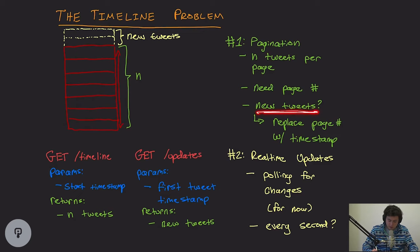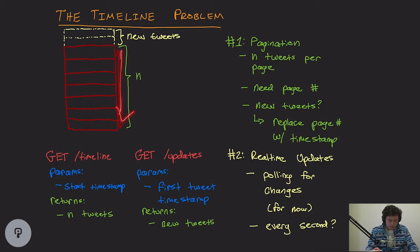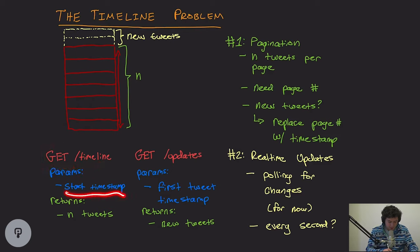In order to do that, we'll consider new tweets and replace the page number with the timestamp of the tweet we're at. Another option is just to use tweet ID — you could say get the next N after this ID. You can also achieve this with timestamp: we want everything that happened after this one. So as I scroll on the client, I'll just send requests to my timeline endpoint — this is a GET request because we're getting data — and we provide the start timestamp of where we want to start looking, then return N tweets.